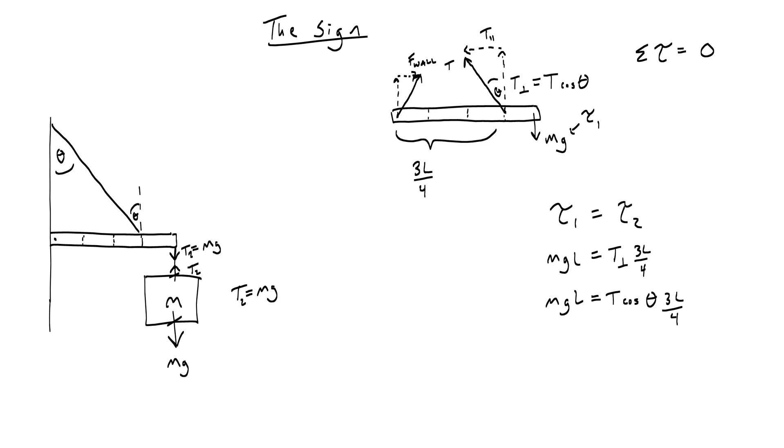Okay, now usually in these problems what you want to do is you want to find the tension, so let's solve this problem for the tension in terms of the weight. The first thing that you do is get rid of L, because it's in both sides, and then you're going to have T cosine theta 3 quarters equals mg.